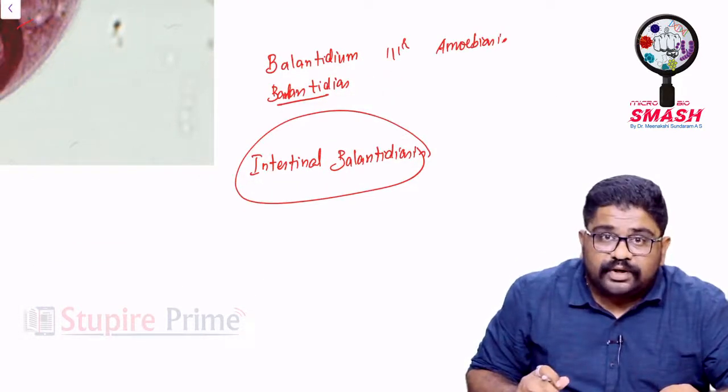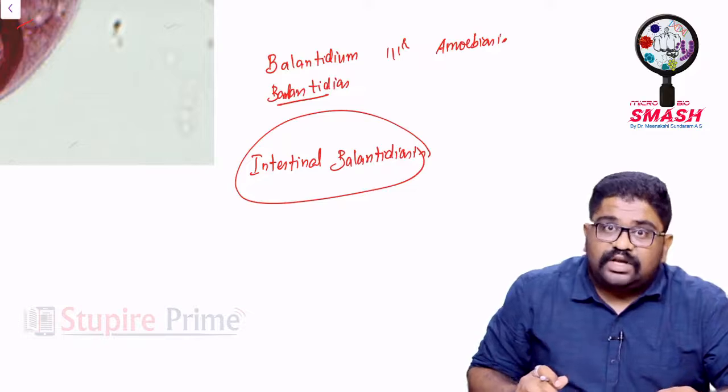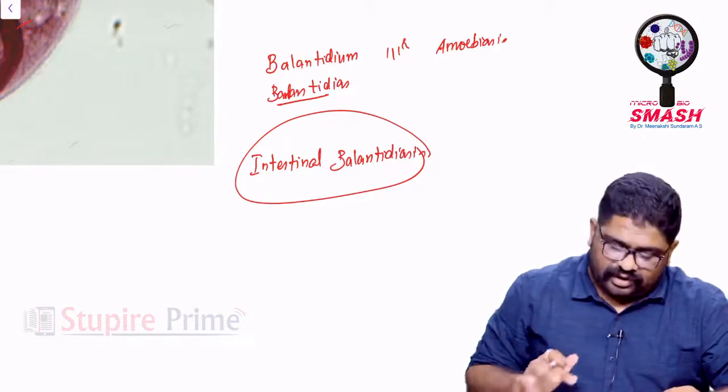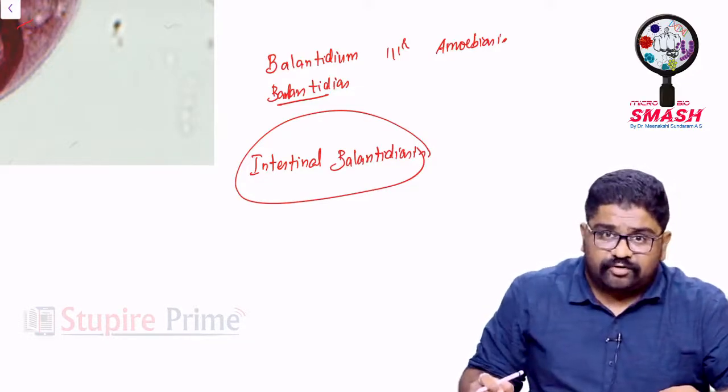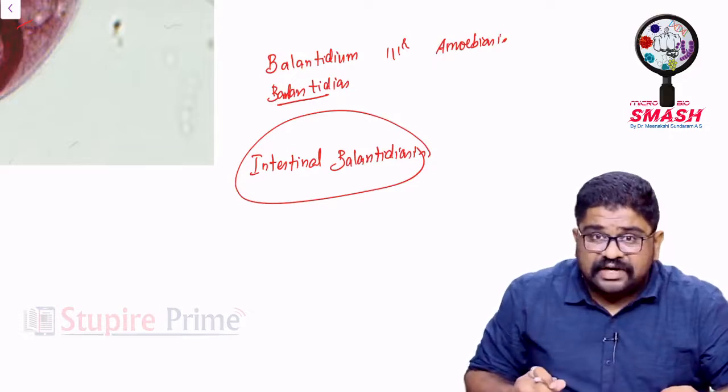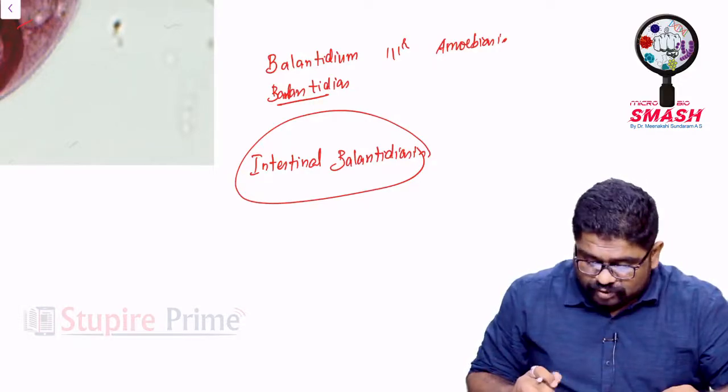At the same time, the organism's movement is actually because of cilia while Entamoeba is moving because of its pseudopodia. This has a bigger advantage than that of Amoeba in moving forward, and this organism can beat its cilia completely inside the GI mucosa.